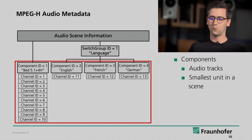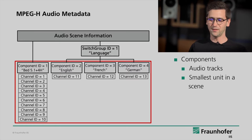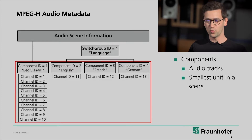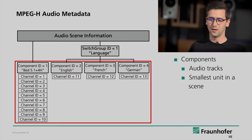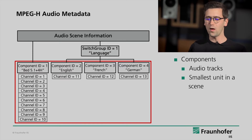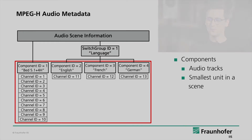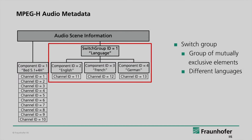In this case here we have 13 audio channels carrying audio data. The first 10 channels will be combined to our 5.1 plus 4 ambience bed. Channels 11, 12 and 13 will be defined as Mono Components, each one representing a language. In order to ensure that the user at home can only select one of the languages at the same time, we combine them into a so-called Switch Group.